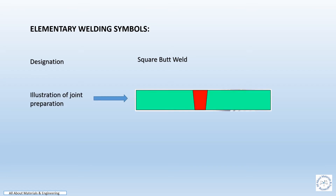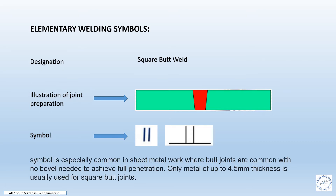Elementary welding symbol: square butt weld. This picture represents the illustration of joint preparation for a square butt weld, and this is the symbol that will be given in the drawing. This symbol is especially common in sheet metal work where butt joints are common with no bevel needed to achieve full penetration. Only metals up to 4.5 mm thickness are usually used for square butt joints.